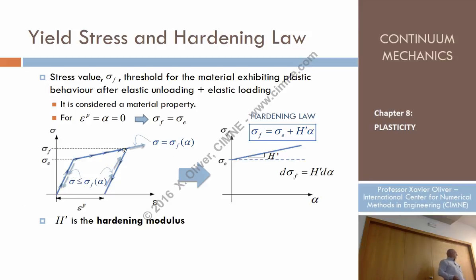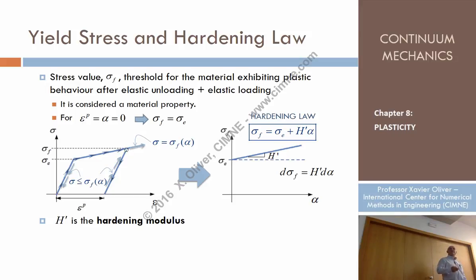What happens when we are at the yield point? The stress equals the yield stress, so sigma minus the yield stress is zero. This marks the point at which the material changes behavior — passing from elastic to plastic. Can the stress ever be greater than the yield stress? No, that never happens.